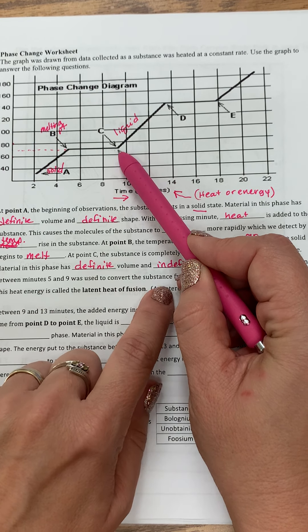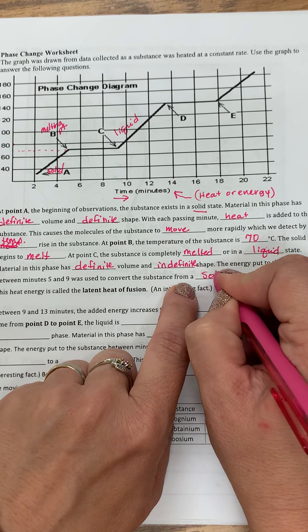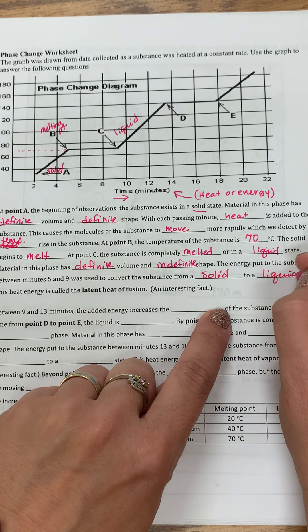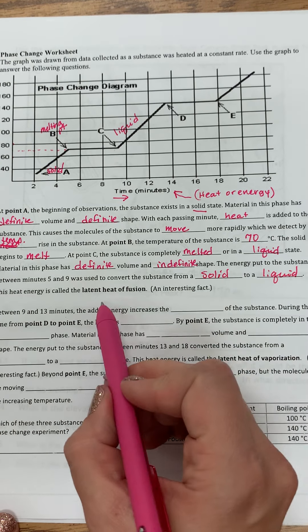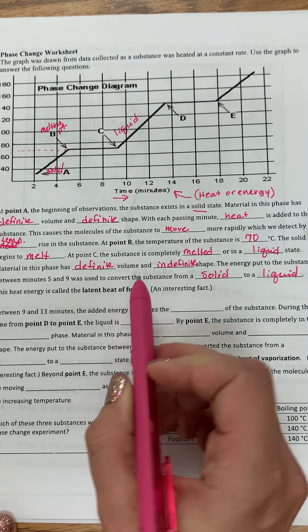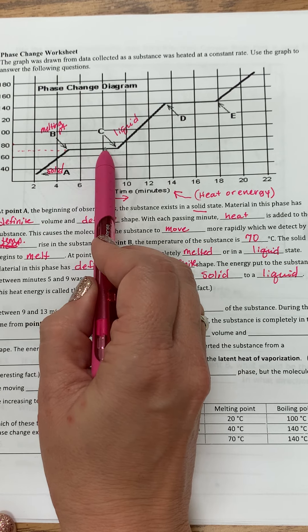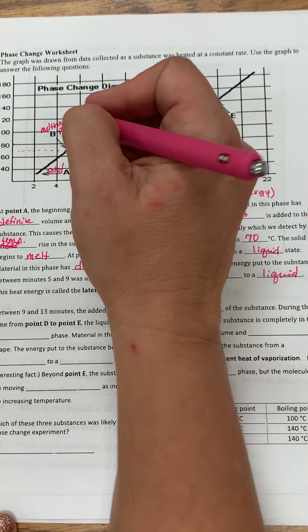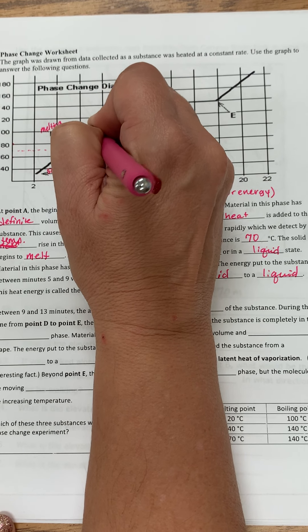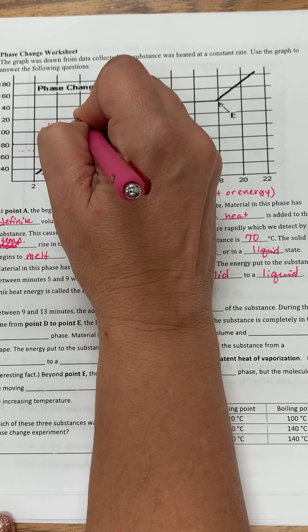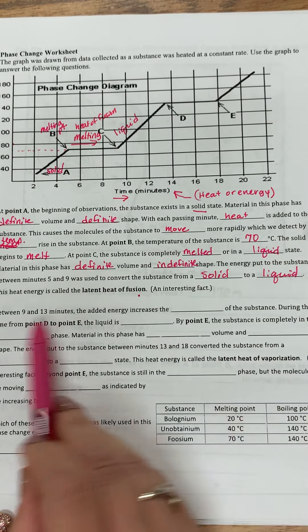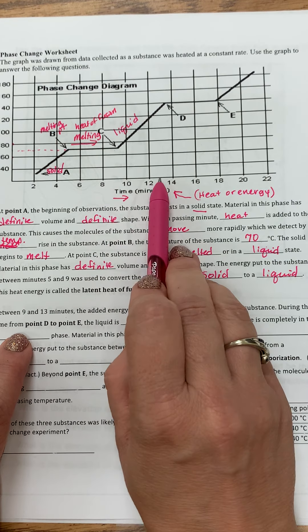The energy put to the substance between minute five, so minute five right here, and minute nine was used to convert the substance from a solid to a liquid. A lot of times you'll see this labeled as heat of fusion. And sometimes you may see this labeled here as melting. So this could be, if you're going this way, this is going to be melting. We also know it as heat of fusion.